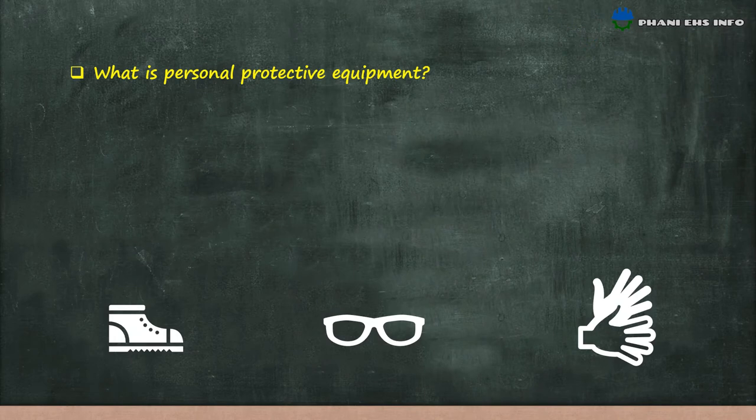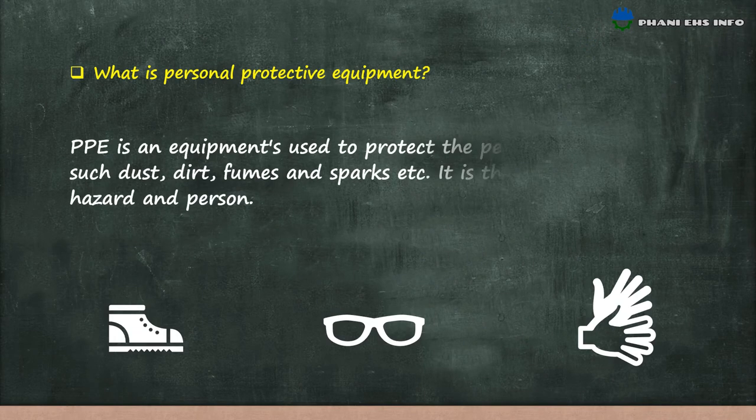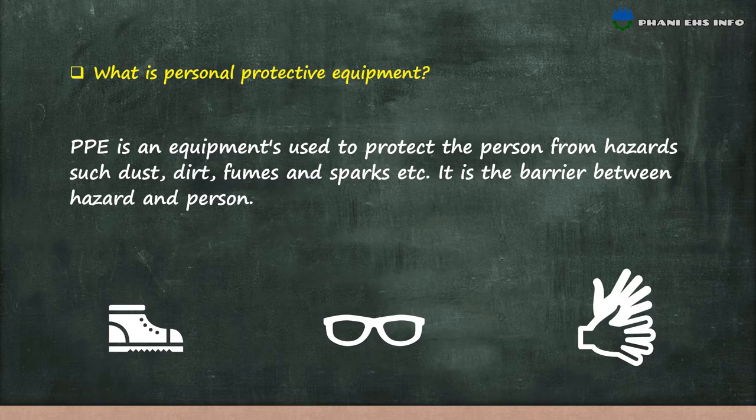What is personal protective equipment or PPE? PPE is equipment used to protect a person from hazards such as dust, dirt, fumes, and sparks. It is a barrier between the hazard and the person.